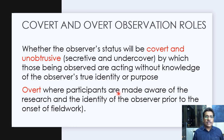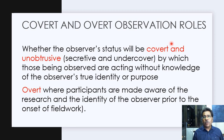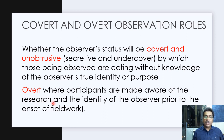This is why covert and overt observation roles are important. When the role is covert and unobtrusive, the researcher is present secretively — almost as an undercover researcher — so those being observed have no knowledge of the observer's true identity or purpose. This can provide richer details about the group because they are unaware of being watched. In the overt process, participants are made aware of the researcher and also of the researcher's identity — they know they are being researched and who is researching them.